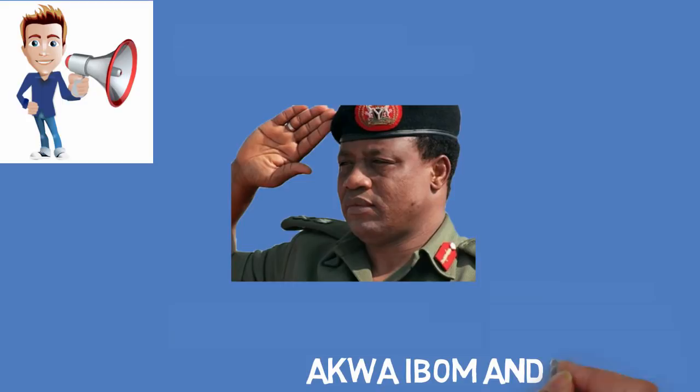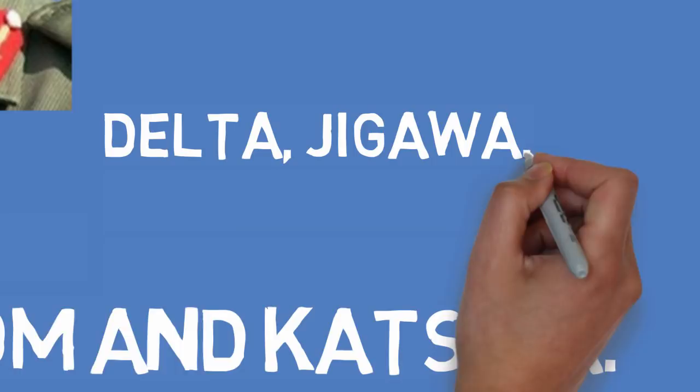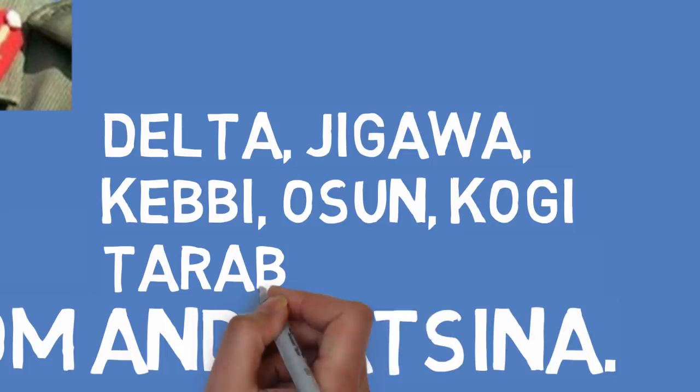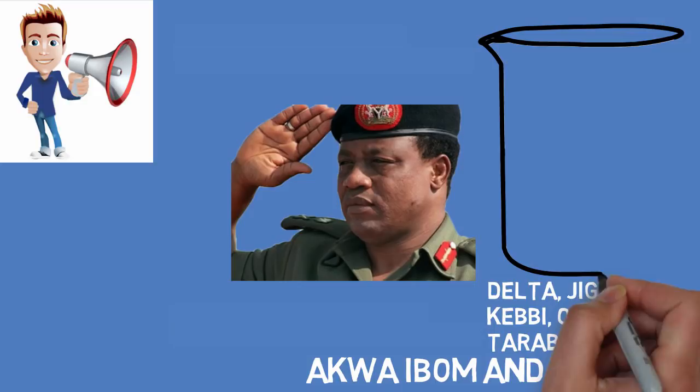On 27th of August 1991, Babangida created nine additional states: Abia, Enugu, Delta, Jigawa, Kebi, Oshun, Kogi, Taraba, and Yobe, bringing the total number of states in Nigeria to 30 in 1991.